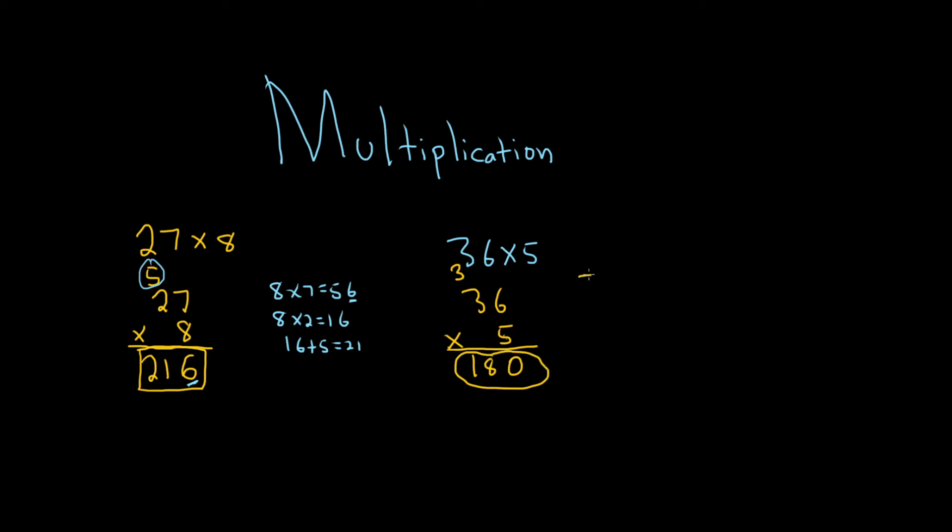I'll show the steps on the side. 5 times 6 is equal to 30. So we wrote down the 0 and we carried the 3. And then we did 5 times 3 and that gave us 15. And then you add 3 to that, 15 plus 3, the one you carried, you add the one you carried and that gives you 18.